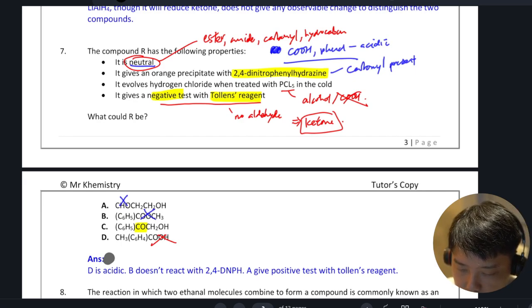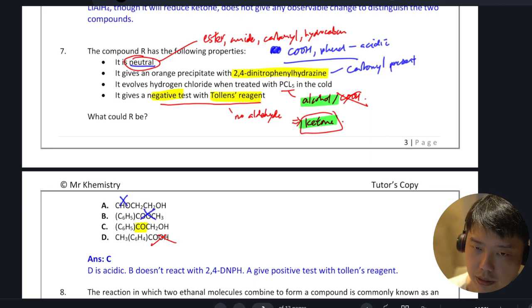So which leaves us with C, right? C has both ketone and alcohol, so it fits the criteria, but it doesn't have carboxylic acid. So the answer here for seven is C.